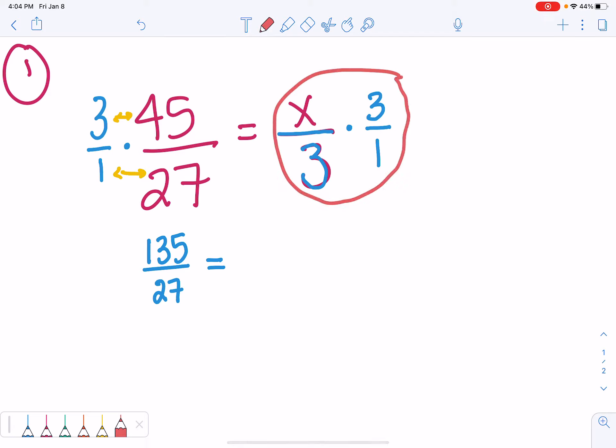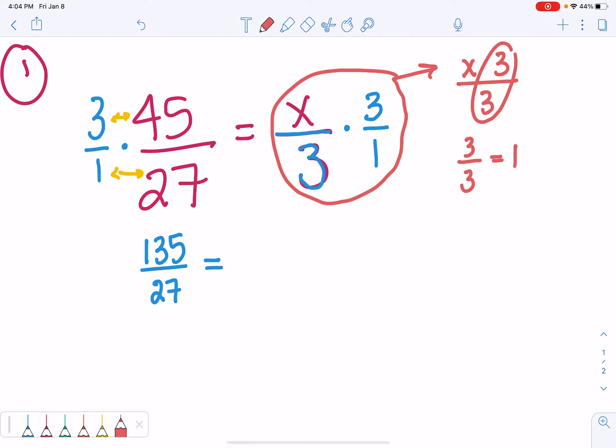So, here, we have x times 3 divided by 3 times 1, which is just 3. We know that 3 divided by 3, any number divided by itself, is equal to 1. So, these cancel, and what we're left with is just x. The next step is to divide 135 by 27, and we get 5 equals x.